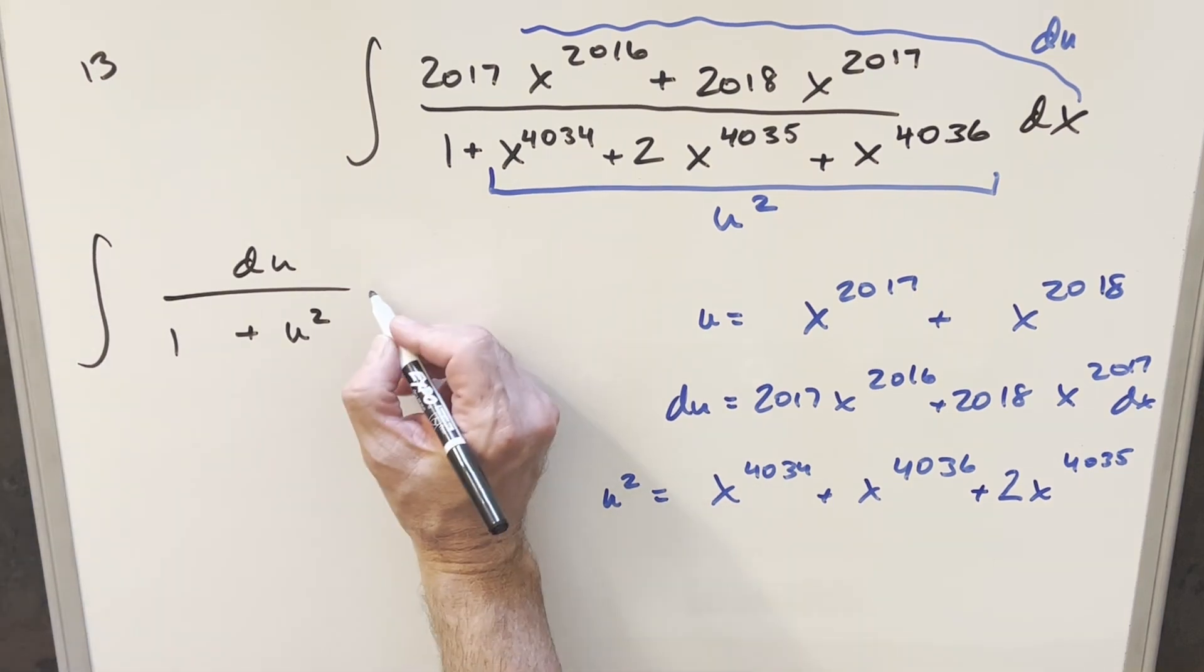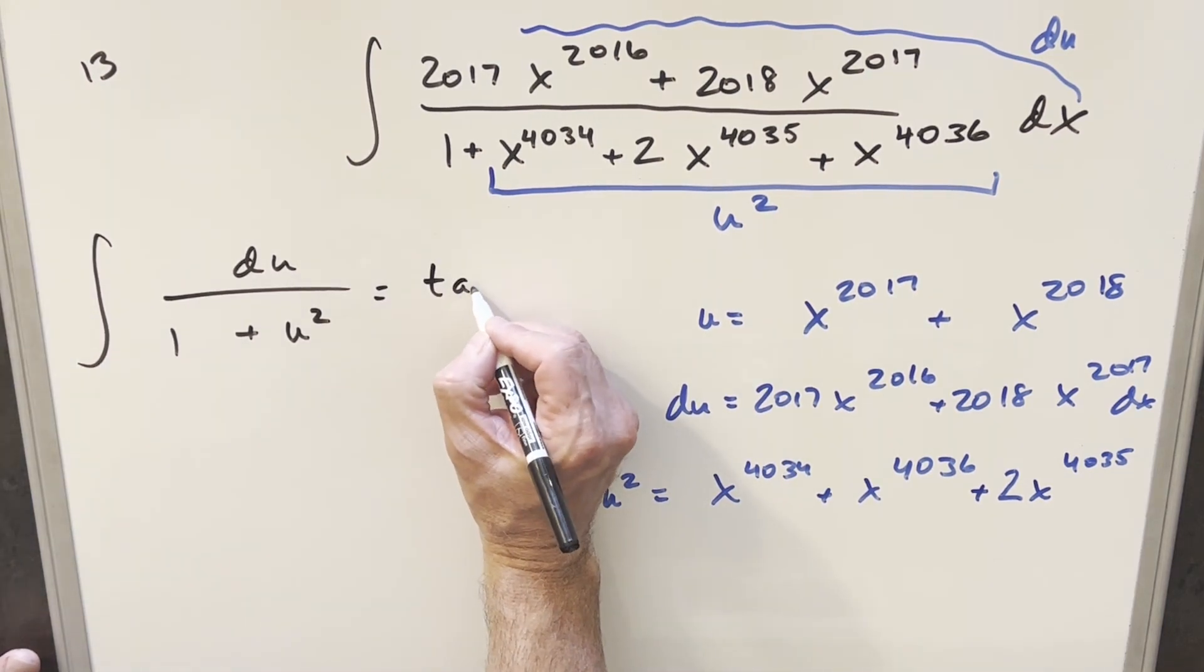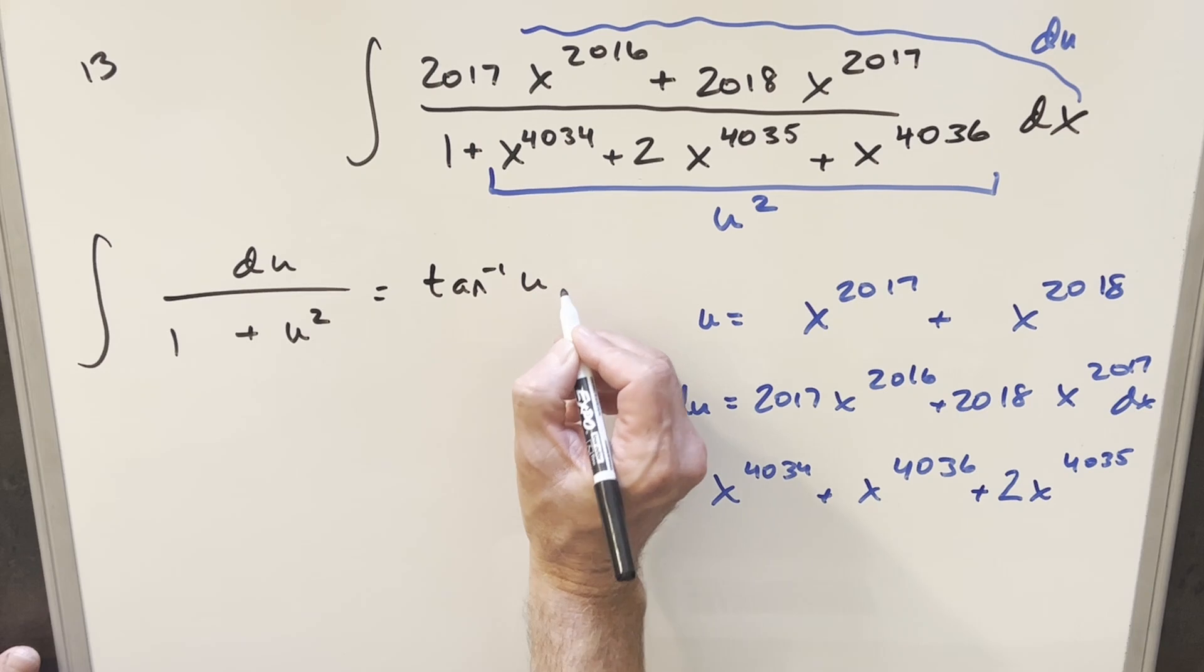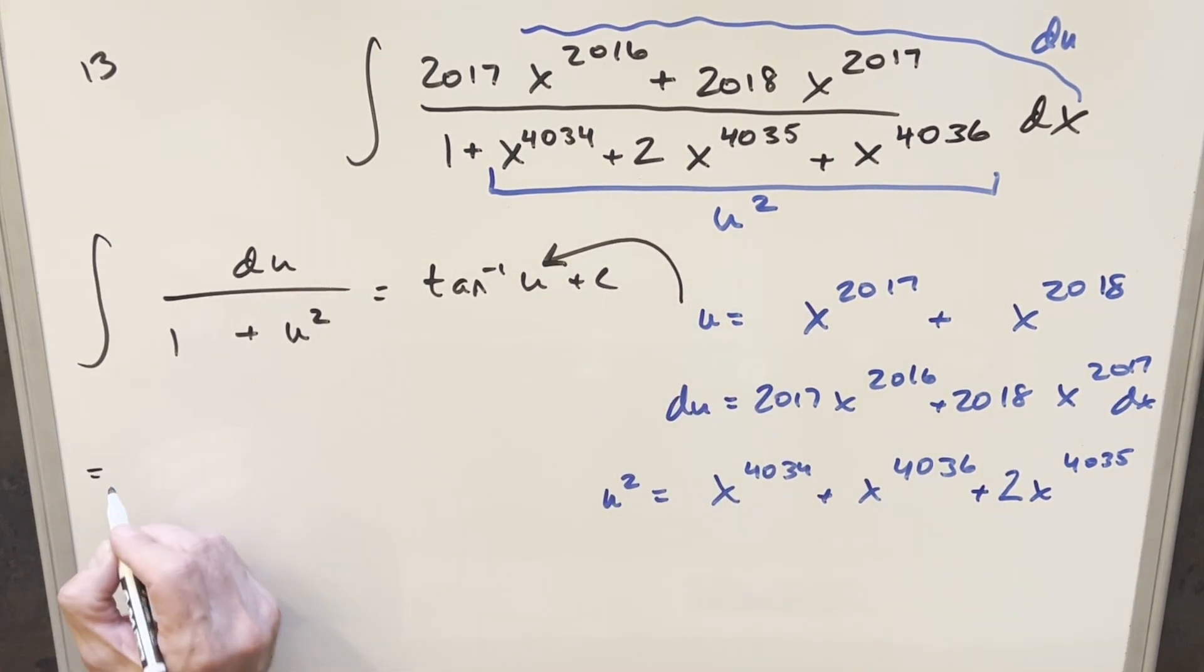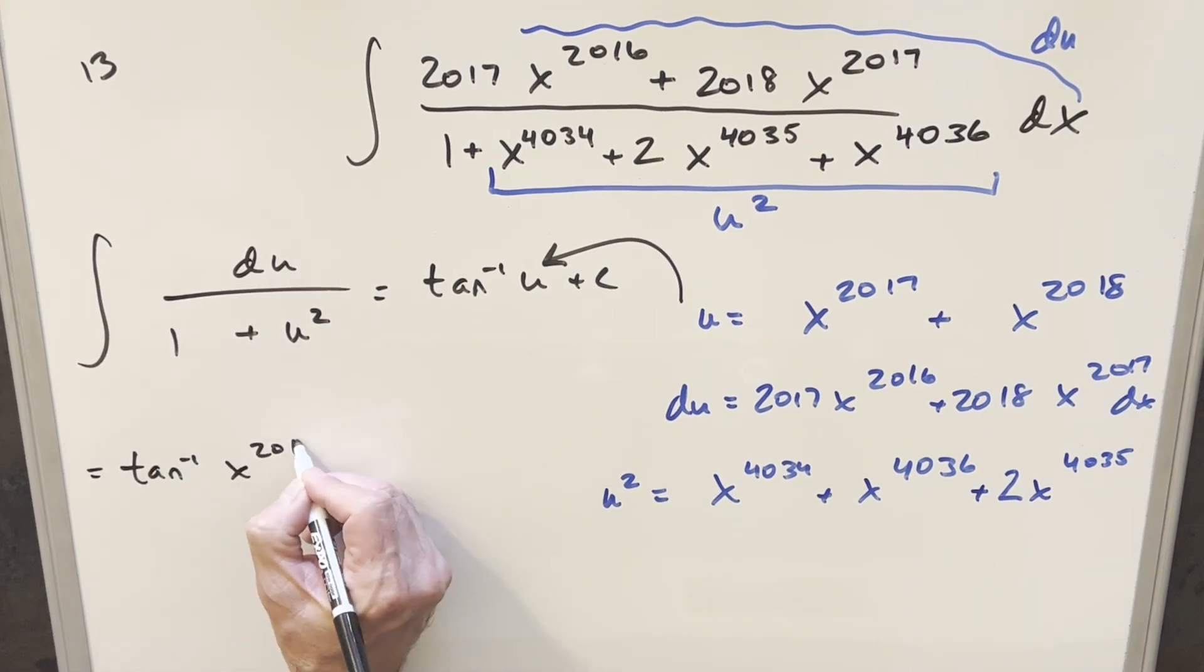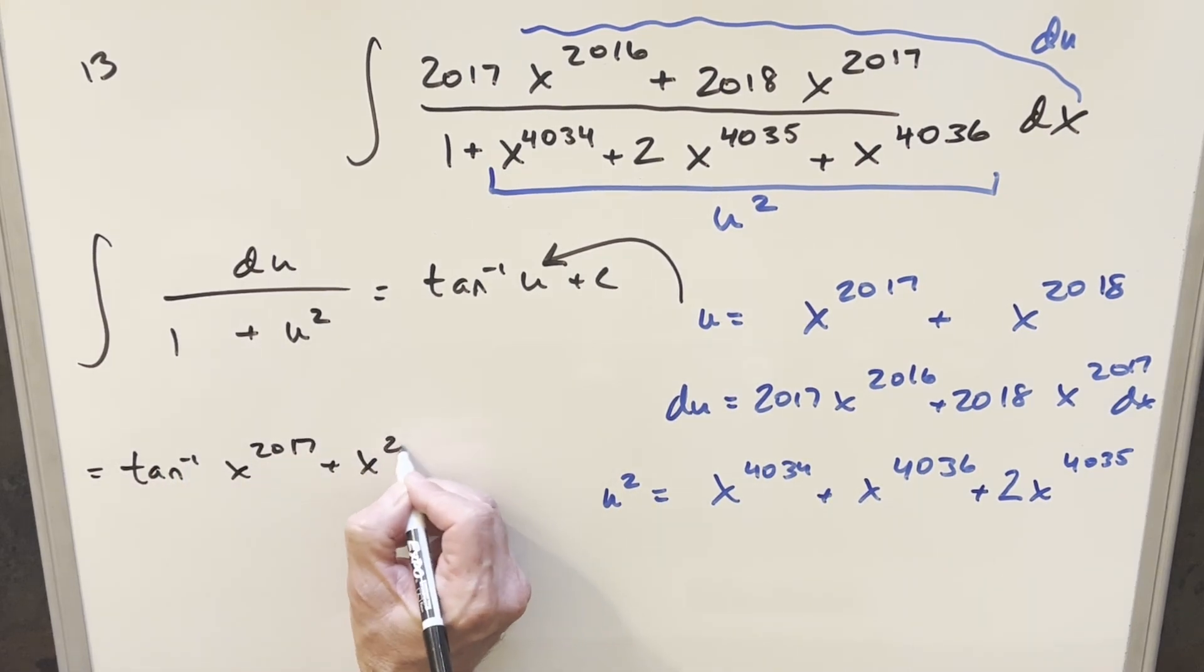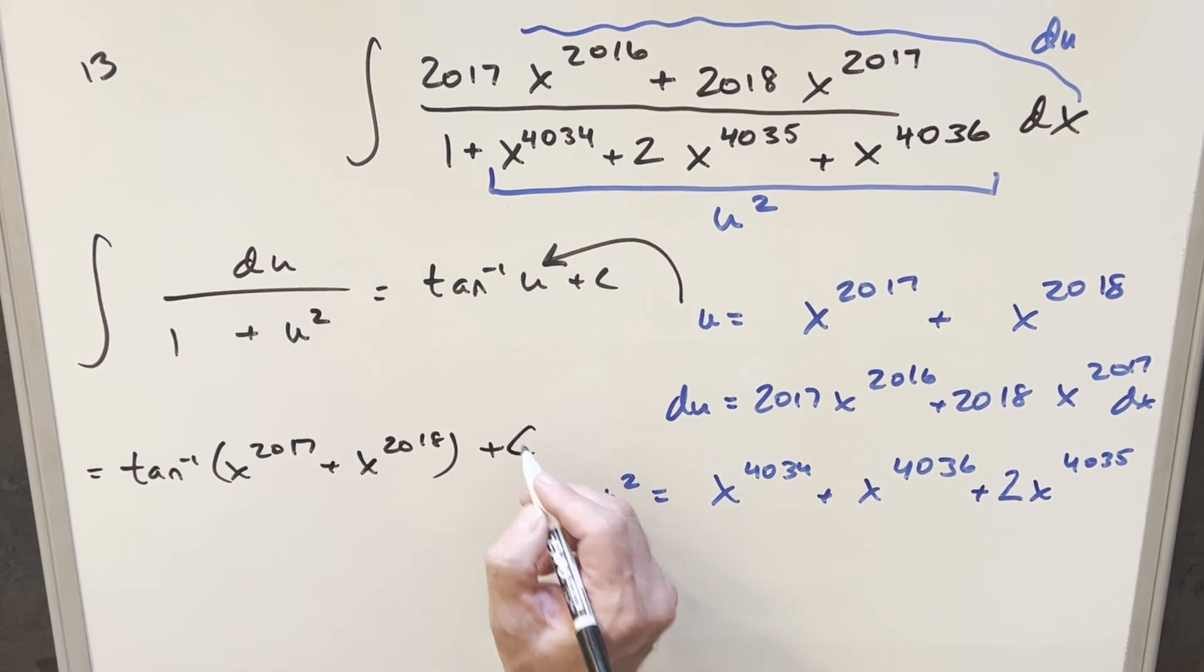This, of course, is the arctan formula. So what we get for this is just going to be arctan of u. And all we need to do is just back substitute in order to finish it off. And so for my final solution to this, we just get arctan x to the 2017 plus x to the 2018. Add a plus c, and that's it.